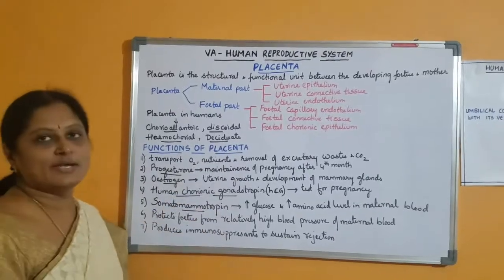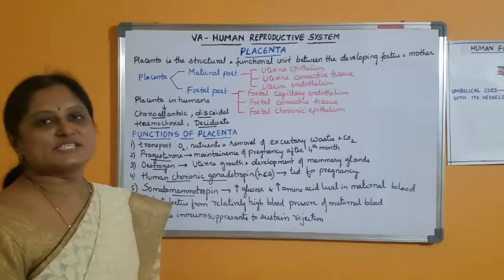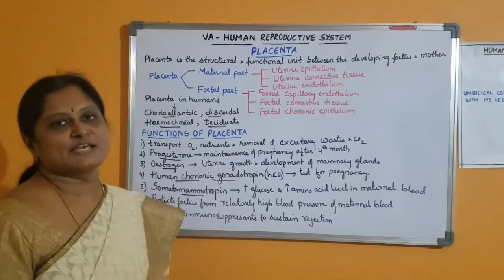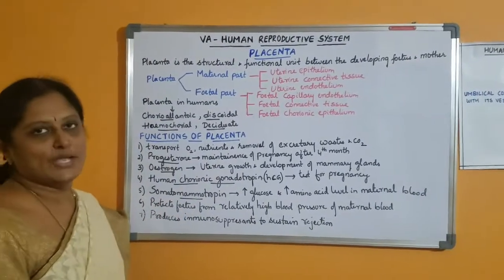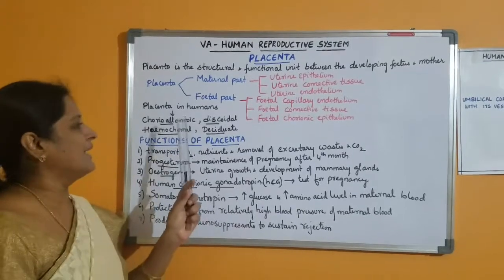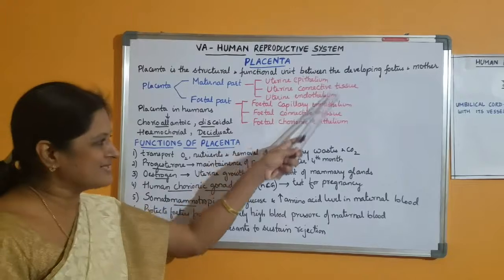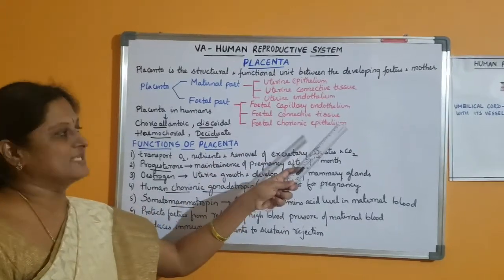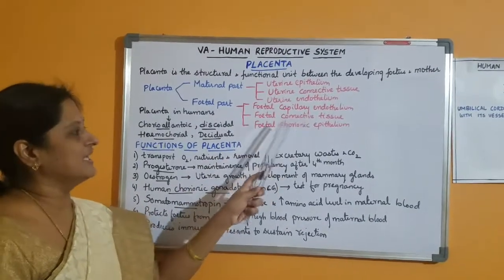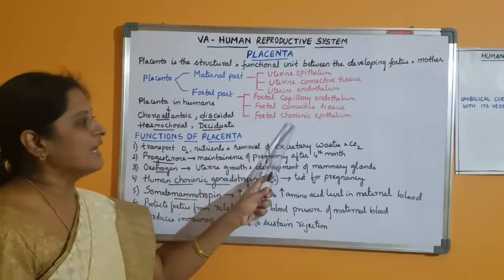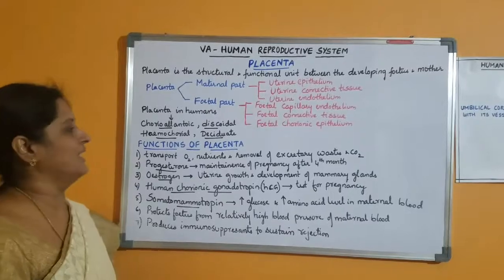The placenta is called discoidal because the placental villi are restricted to only the dorsal surface of the blastodisc. It is called hemochorion because the maternal blood comes in direct contact with the fetal chorion. In humans, the first five layers degenerate and the blood of the mother comes in contact with the fetal chorionic epithelium, so we call it hemochorion.